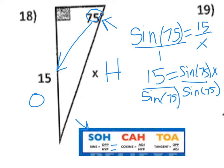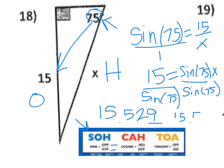In my calculator I put 15 divided by the SINE of 75. Remember that the SINE, COSINE, and TAN buttons are located above buttons 7, 8, and 9, right above the comma and the parentheses buttons. When I did 15 divided by SINE of 75, I got an answer of 15.529. I look at this number — because it's 5 or higher, my answer is 15.53.